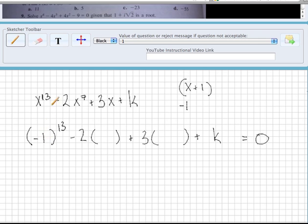It looks like we get negative 1 to the 13th minus 2 times negative 1 to the 7th plus 3 times negative 1 plus k equals 0.